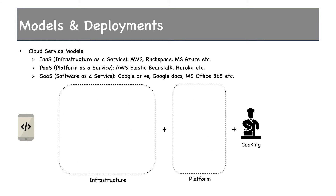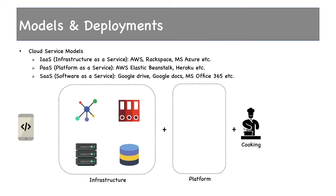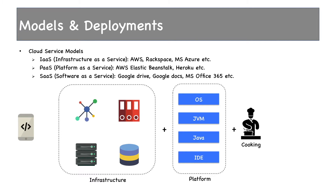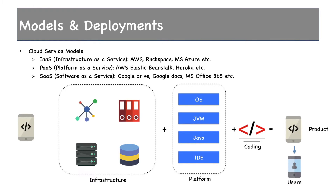Now let's go technical. Suppose you are creating a mobile app using Java. What do you need? Infrastructure: server, database, storage, network, etc. Platform: operating system, Java Virtual Machine, Java, an IDE like Eclipse, etc. Then you code and create your final product, which is used by end users.